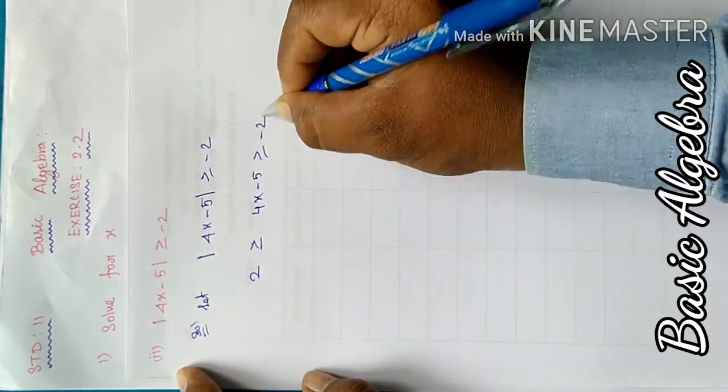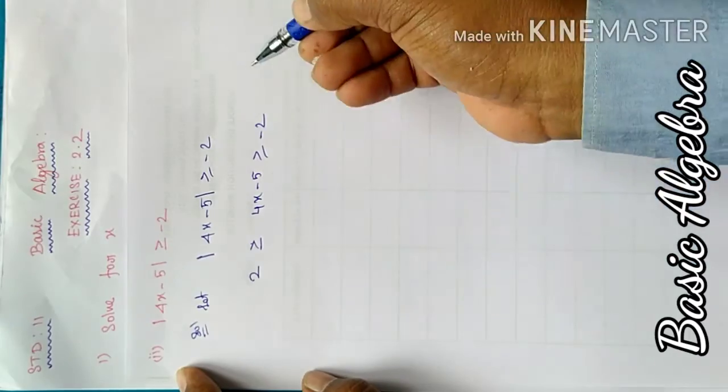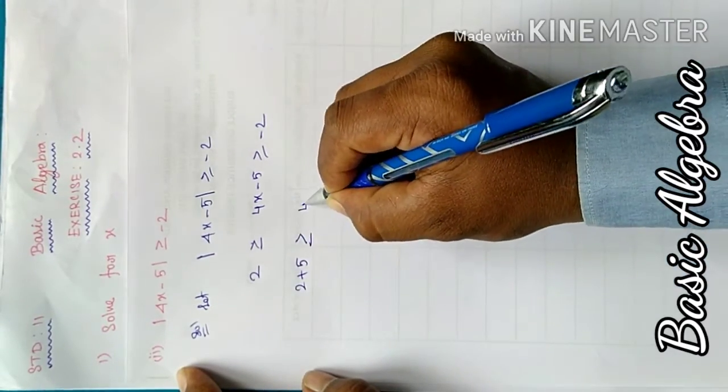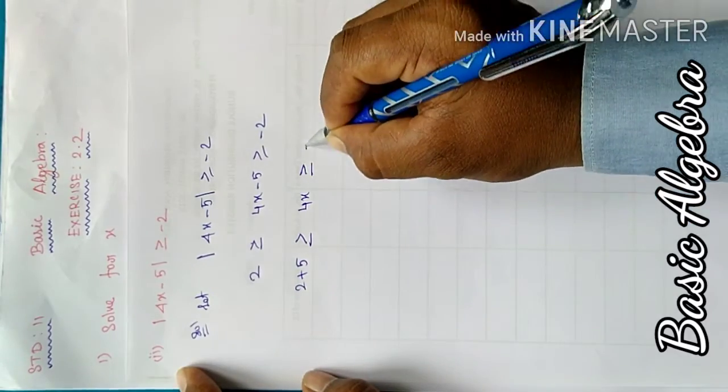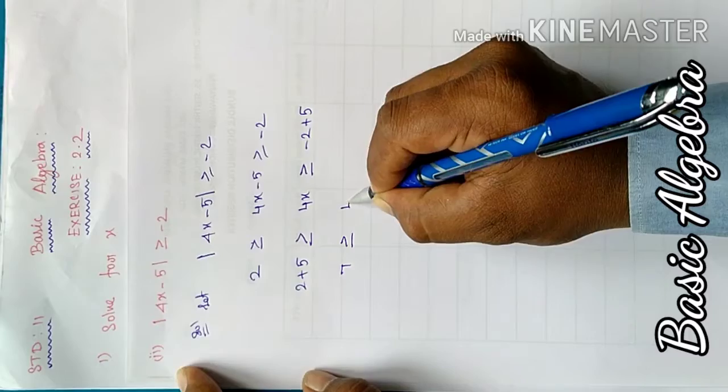Now we add 5 to all parts. Therefore: 2 + 5 ≥ 4x ≥ -2 + 5, which gives us 7 ≥ 4x ≥ 3.